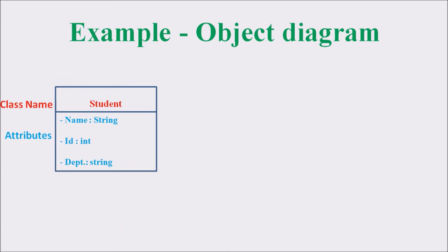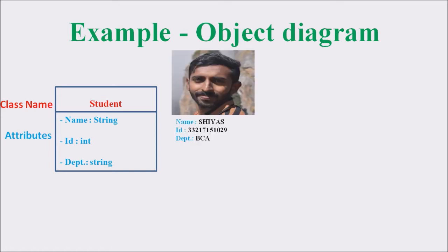Now let us consider the object diagram. As we know, an object is an instance of a class. Similarly, an object diagram is a subset of a class diagram. In the object diagram, we see a rectangle with two compartments — the topmost represents the class name, and the second represents the values associated with that particular object. For example, consider a student named Shias with ID 332-17151029 and department BCA. This student Shias is the first object, S1, associated with this class.